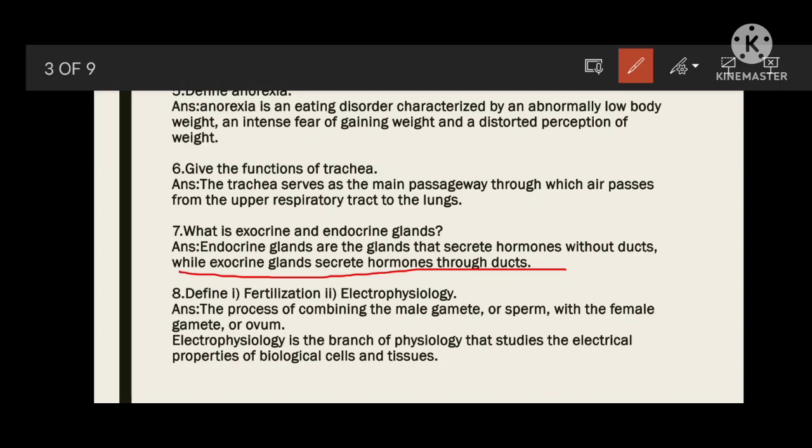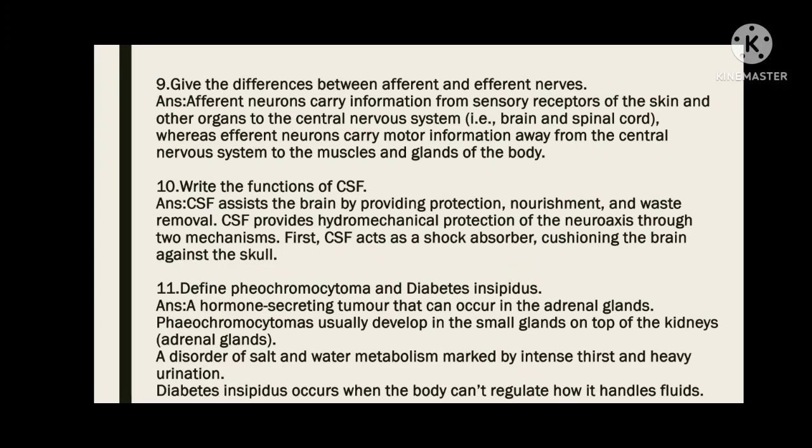Next, the difference between afferent and efferent neurons. Afferent neurons carry information from sensory receptors of the skin and other organs to the central nervous system (brain and spinal cord). Efferent neurons send information away from the central nervous system to the muscles. Towards the CNS is afferent; away from the CNS is efferent.